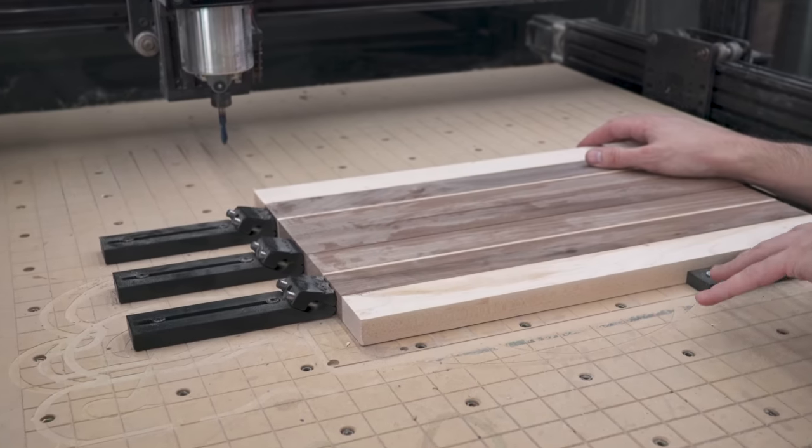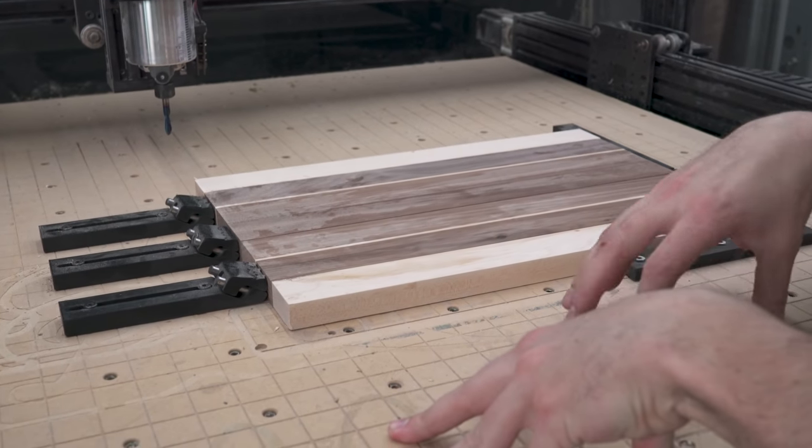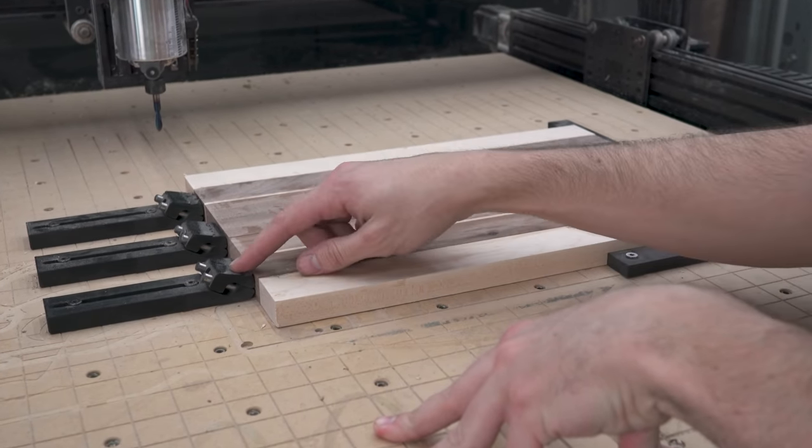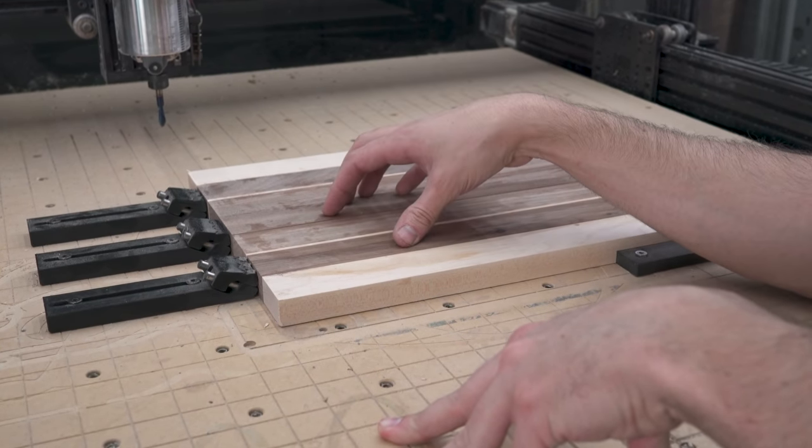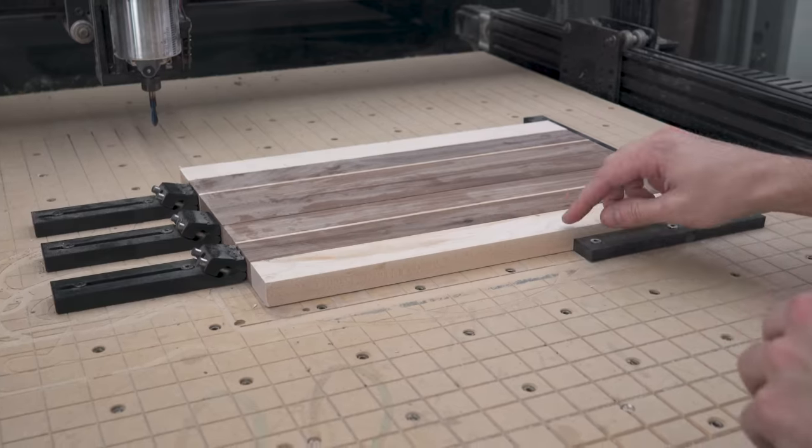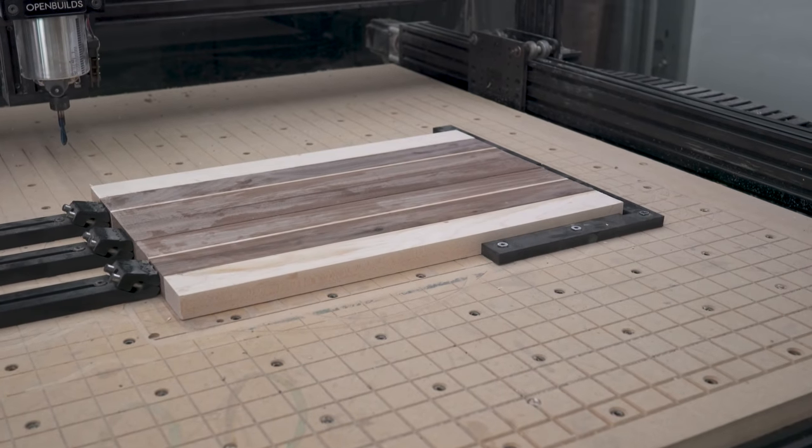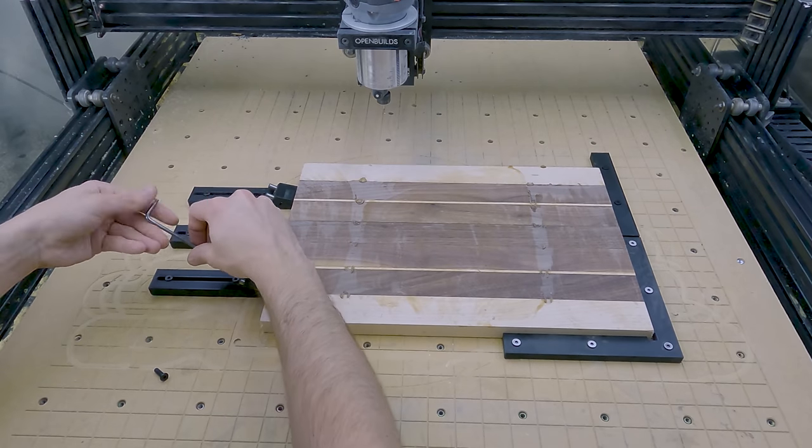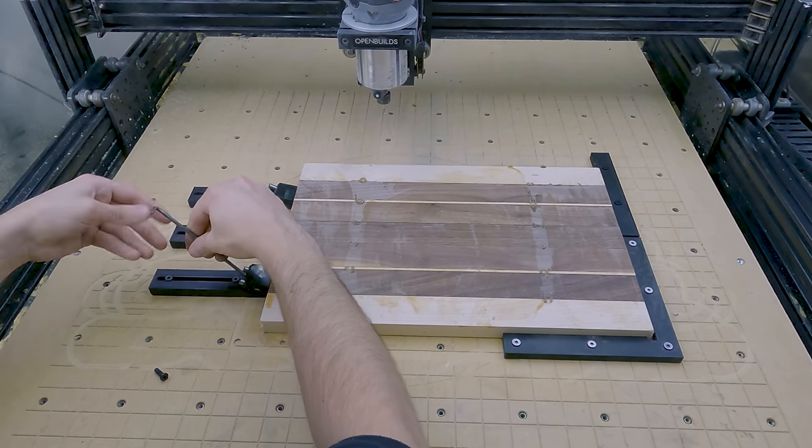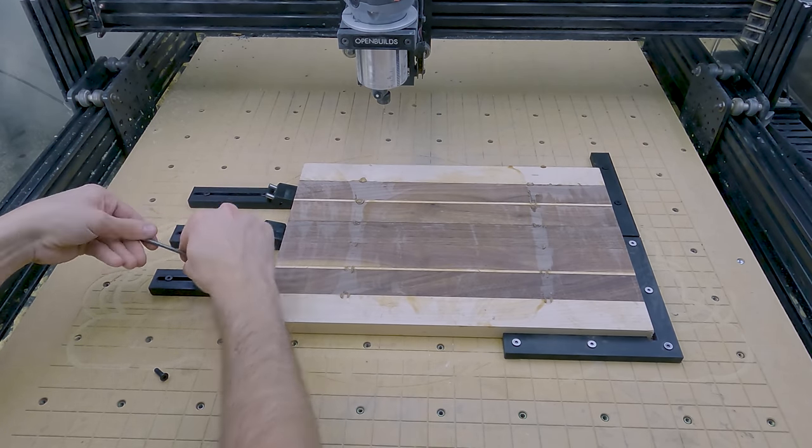I love 3D printing work holding devices especially for the router because one, they're cheap and two, if I nick them with the end mill, the end mill is not going to break. So it's secured by this right angle 3D printed piece and then I just tighten this central bolt in the toe clamps and it's going to press down on the board.